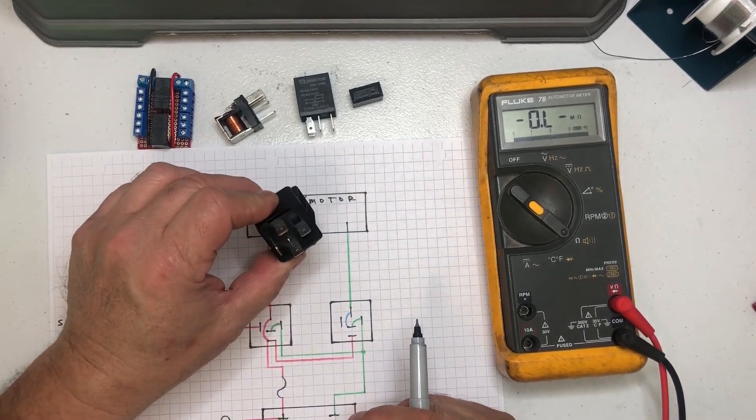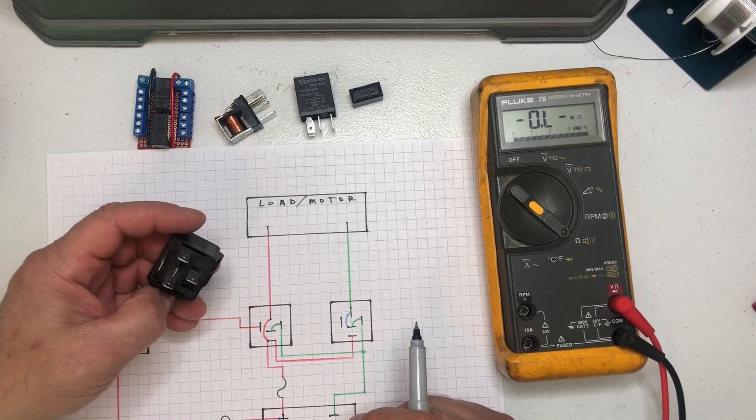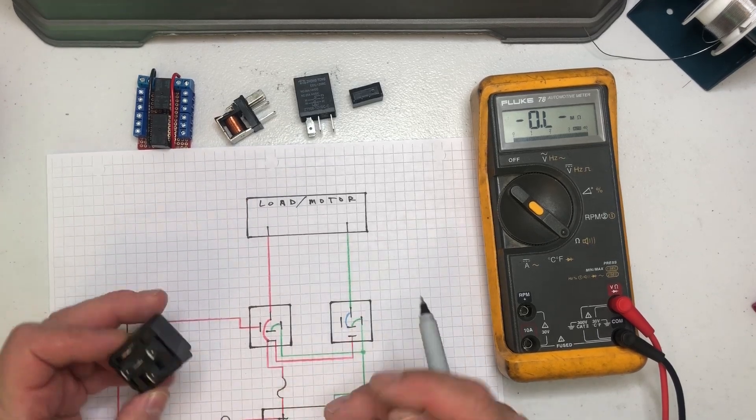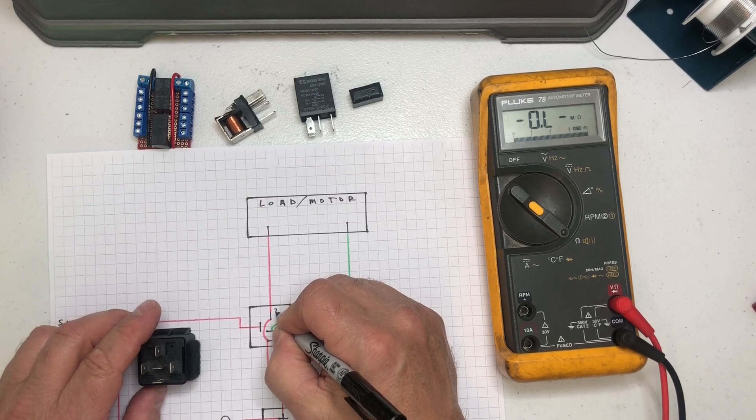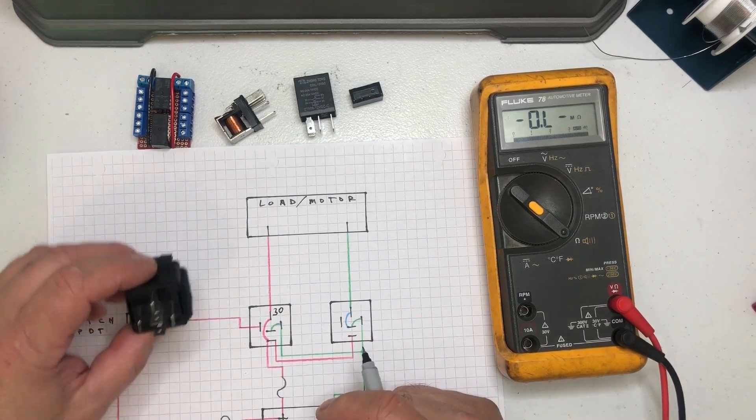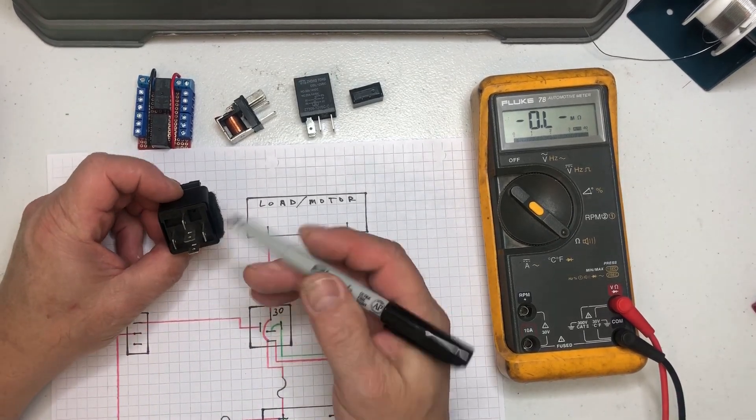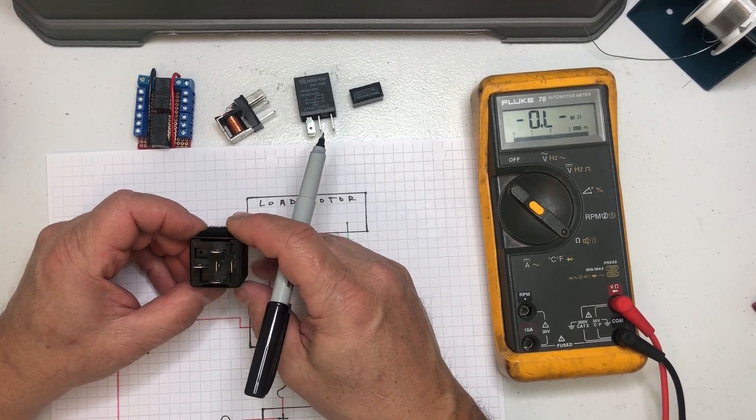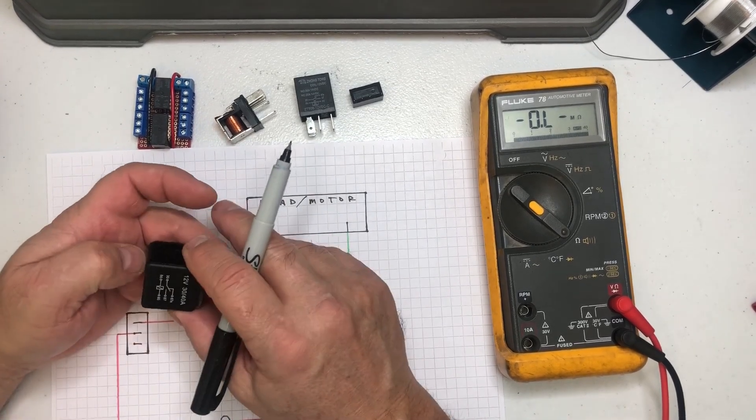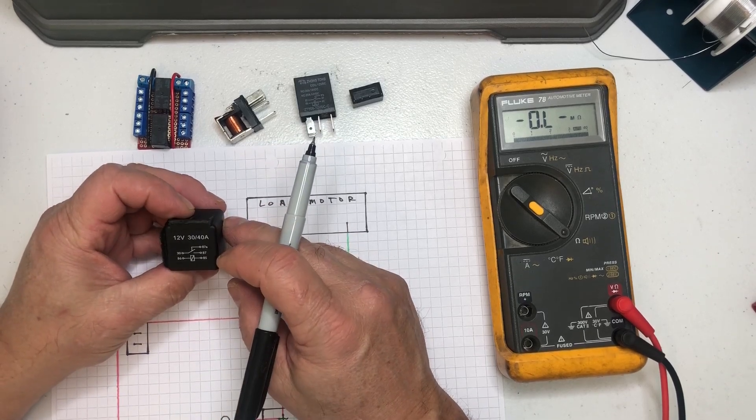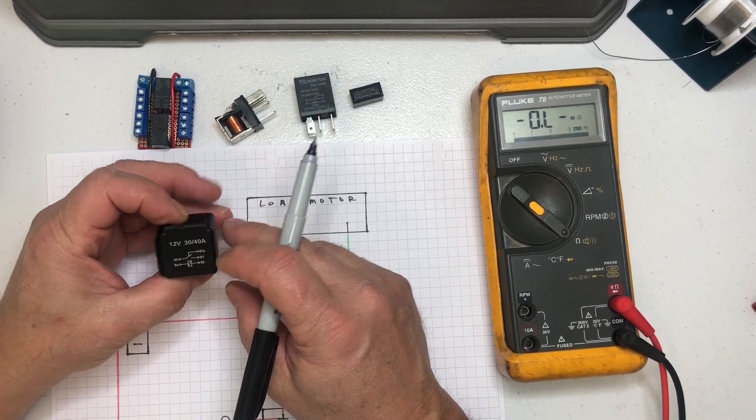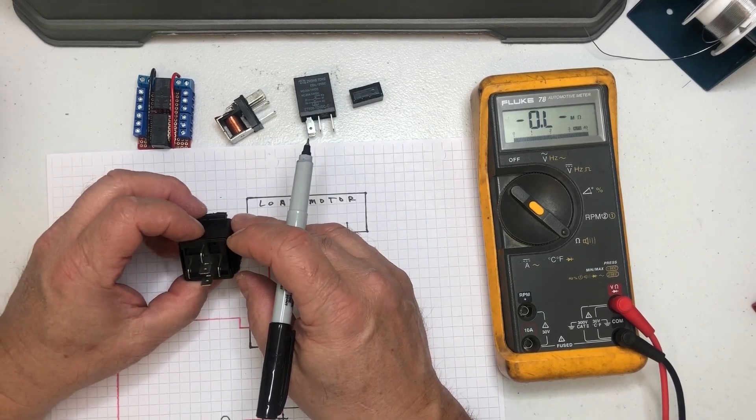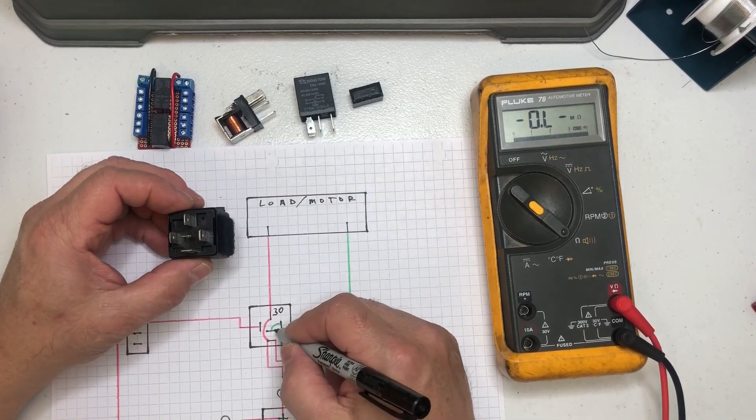Then if we look at these terminals here, 30, this one's upside down, this one would represent 30. Okay, then we have this on here, 87A. Okay, showing 87A is the one that's closed.